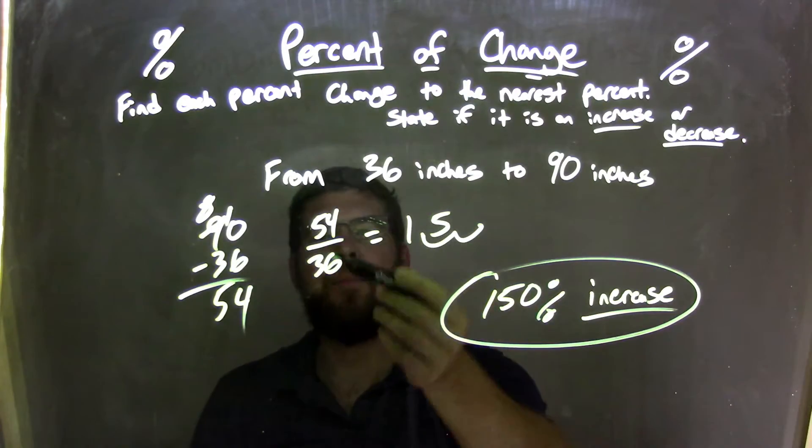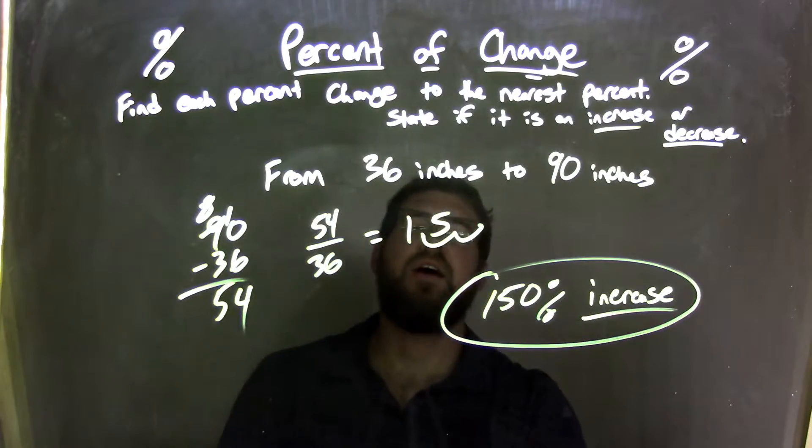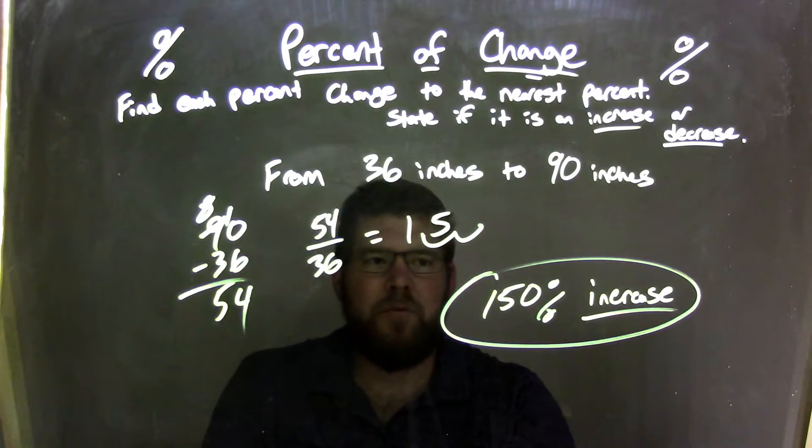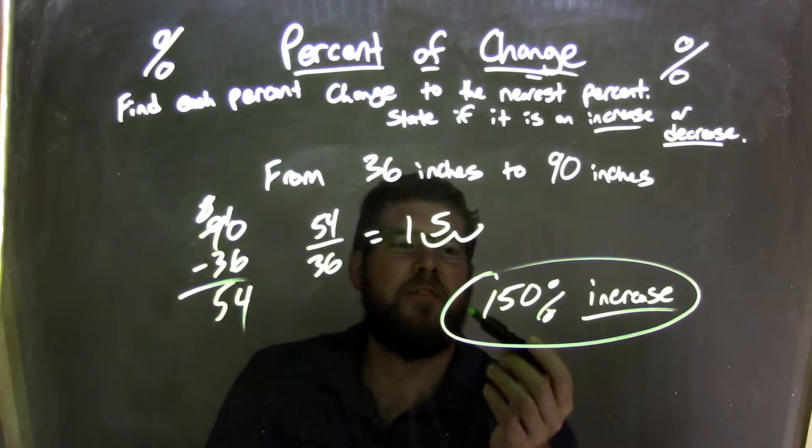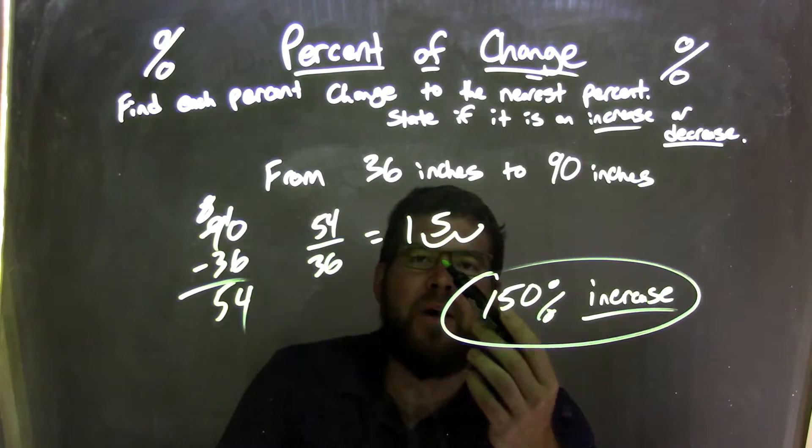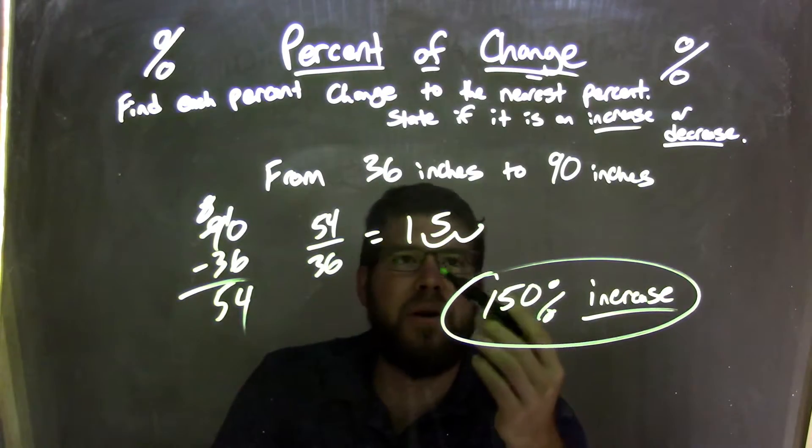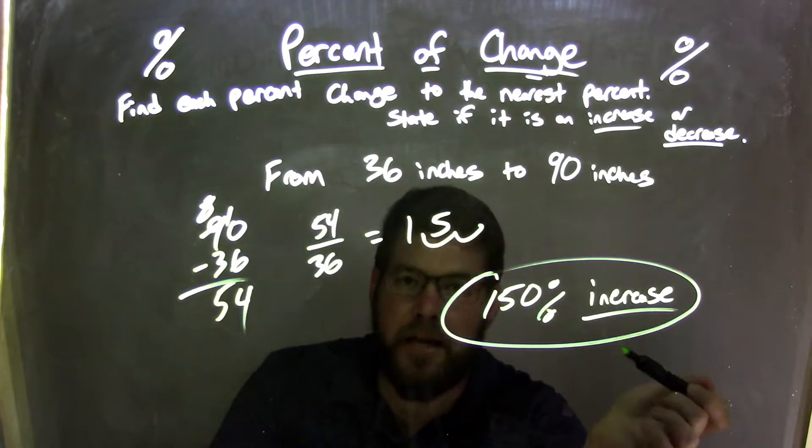We take that 54, divide it by the first number 36, and we get 1.5. We convert that to a percent, and that 1.5 turns out to 150%. And so our final answer here is from 36 to 90 inches, it's a 150% increase.